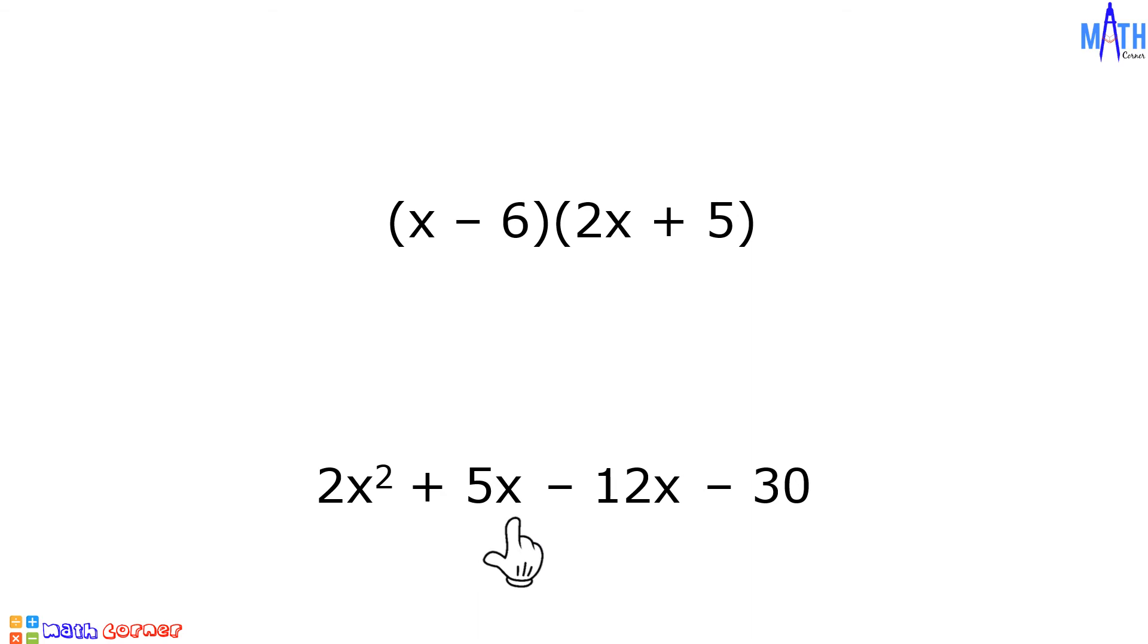Since 5X minus 12X is equal to negative 7X, then we have 2X squared minus 7X minus 30. And this is the product.